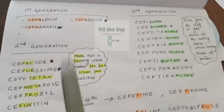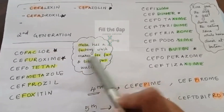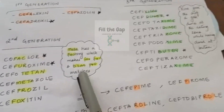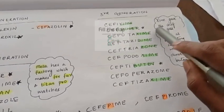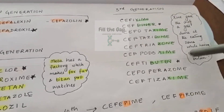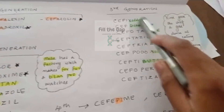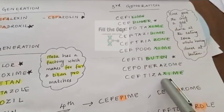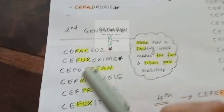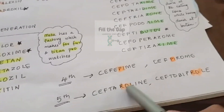Let's do a recap. First generation: 'cepha' except cephachlor. Second generation: use the mnemonic — Meta has a factory which makes fox fur and Titan Pro watches. Third generation: Zyme gave the chef a gold dime at the eating zone while having dinner at Bhutan. Remember, all 'zyme' endings are third generation except cefuroxime. Fourth generation: pi. Fifth generation: rol.